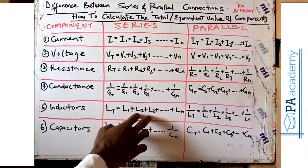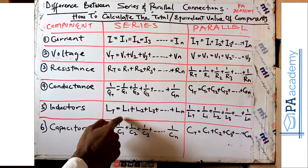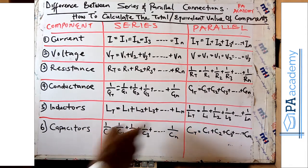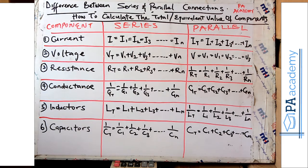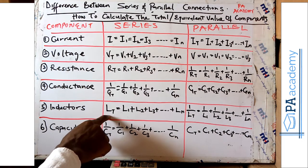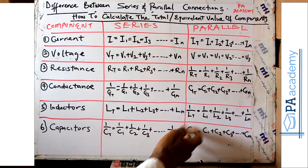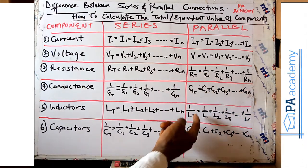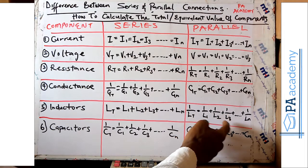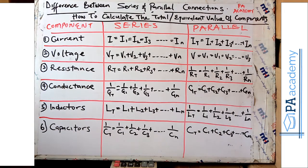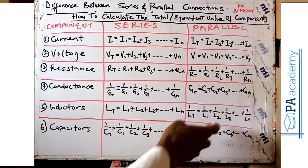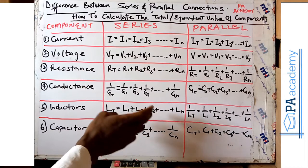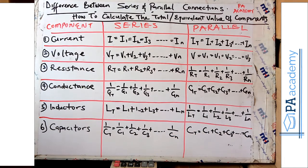For inductors connected in series, you add the value of each individual inductance: Lt = L1 + L2 + L3, depending on the total number of inductors in the circuit. For parallel inductors, the same approach as parallel resistance applies: 1/Lt = 1/L1 + 1/L2 + 1/L3, continuing depending on the number of inductors in the circuit.